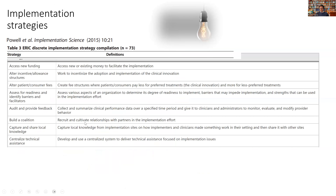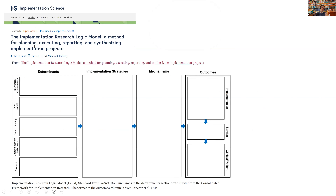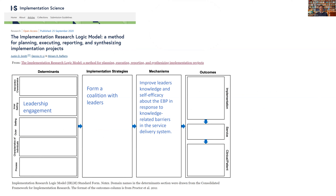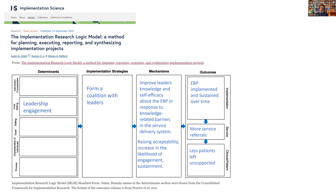There are a whole list of strategies within the science. This is Powell's 2015 ERIC strategy compilation — 73 strategies you could potentially use. You might look at needing to engage leadership and find a strategy like 'build a coalition' — recruit and cultivate relationships with partners in the implementation effort. You can even put together a logic model: targeting leadership engagement, forming a coalition, improving their knowledge and self-efficacy, raising acceptability, increasing sustainment. It's all logical, it makes sense.